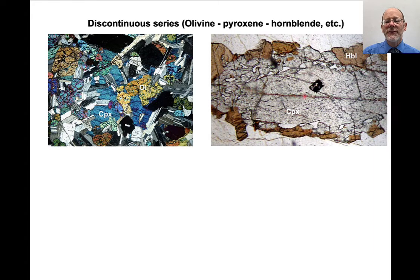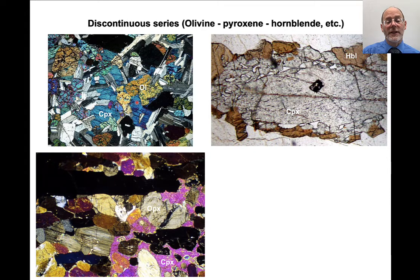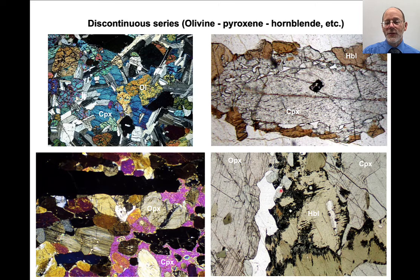Here is a different rock showing clinopyroxene that has been overgrown with hornblende. And here is one where we have orthopyroxene overgrown by clinopyroxene. The system can go olivine → orthopyroxene — which you don't always see, sometimes it goes directly olivine to clinopyroxene — but in many systems it can be olivine → orthopyroxene → clinopyroxene. Then there's clinopyroxene overgrown by hornblende, and even a little bit of biotite appearing toward the very end of the sequence.